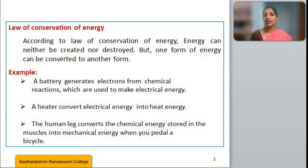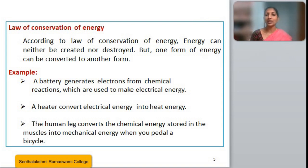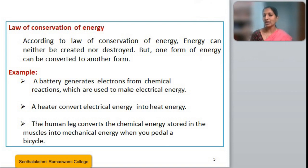This is the main reason why we go behind energy and how we can transform energy from one form to another. For example, a battery can generate electrons from chemical reactions, which is used to make electrical energy. A heater converts electrical energy into heat energy, whereas our human legs can convert chemical energy stored in our muscles into mechanical energy when you pedal a bicycle.